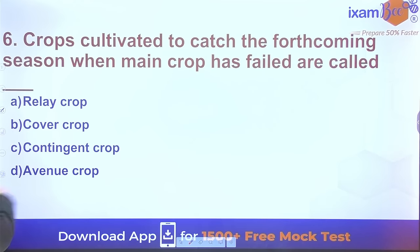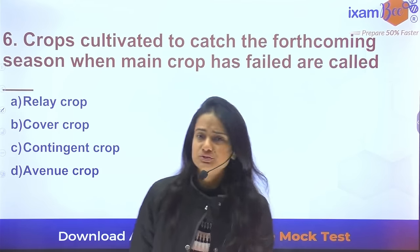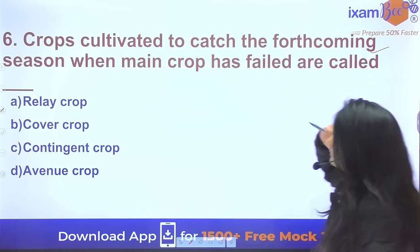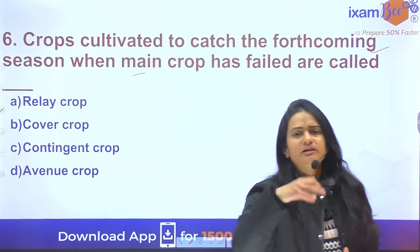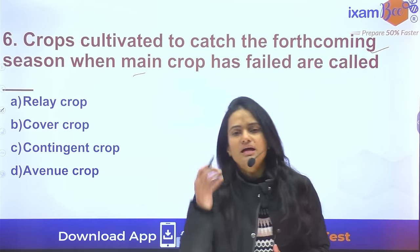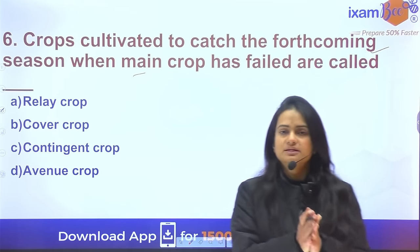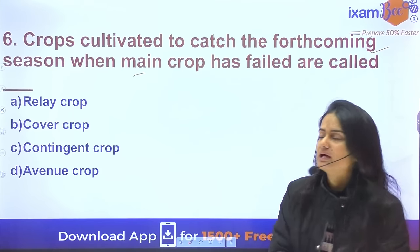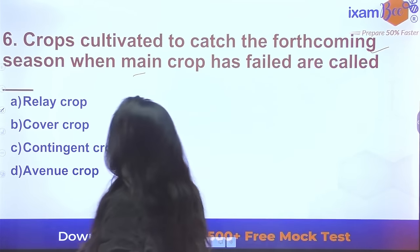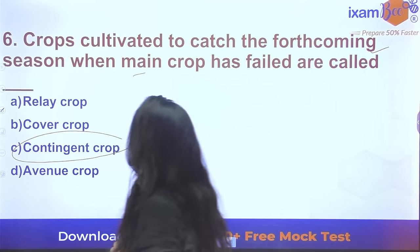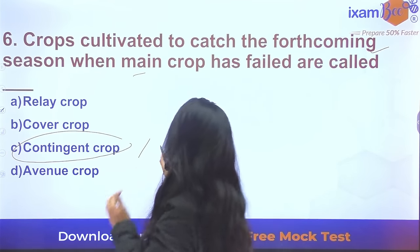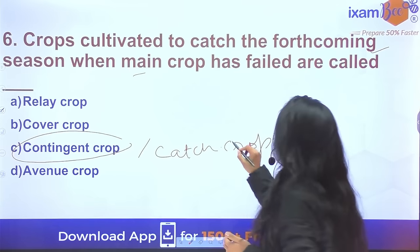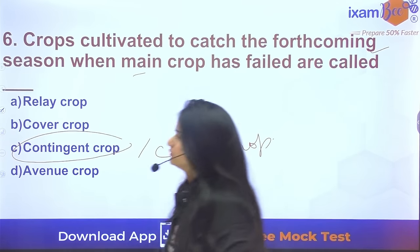Question 6: What are crops cultivated to catch the forthcoming season when the main crop fails due to natural calamity? To compensate economic loss, if we put another crop, it is known as a contingent crop or catch crop. The best example is toria.